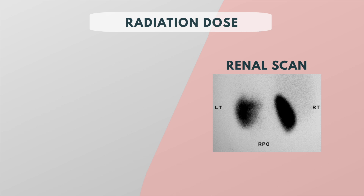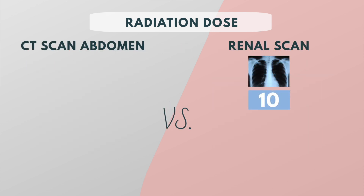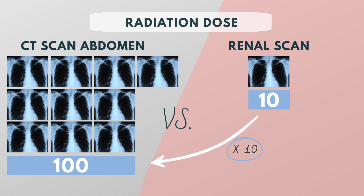Parents are often concerned about the radiation dose their child may receive during a scan. You can reassure them that the effective dose will be very low, especially compared to a CT scan of the abdomen. Radiation exposure from a renal scan is approximately 1 mSv, compared to 10 mSv for an abdominal CT. In other words, the radiation dose of one renal scan is approximately equivalent to 10 chest x-rays, while an abdominal CT is equivalent to 100 chest x-rays.